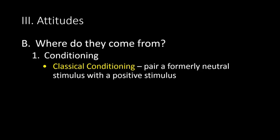So where do attitudes come from? First, they can be conditioned. Classical conditioning, also known as Pavlovian conditioning, involves an automatic response where we pair a formerly neutral stimulus with a positive stimulus, so that neutral stimulus can now be seen as positive.